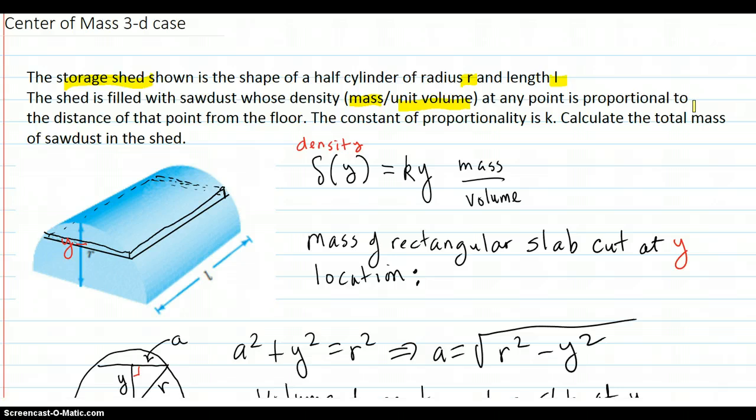They probably meant inversely proportional because you would think that the mass would be more packed. The sawdust would be packed at the bottom and would get less packed as you rose. But that's not the way they said it, so we're going to go with the way they said it. The constant of proportionality is K. Calculate the total mass of the sawdust in the shed.